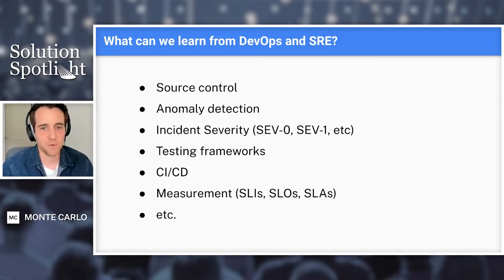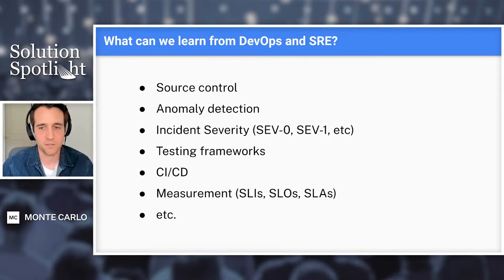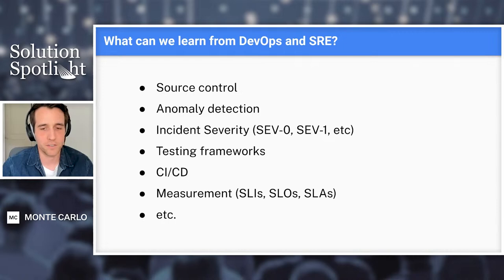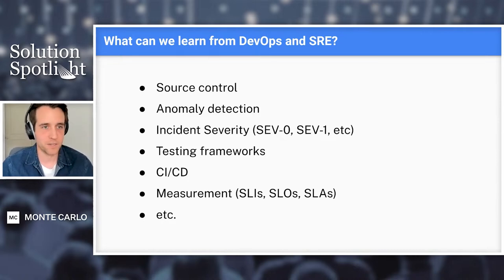There's so much to be learned from DevOps because effectively it's very similar to what we're trying to do. We have code that data engineers are writing, we are merging that code, we're potentially finding anomalies, and then we can set things like severity to incidents. We want severity so that we know the difference between a sev-zero — where basically your entire company should stop what they're doing and solve the problem — or a sev-four where maybe we just ignore this for now. Also things like testing frameworks, how do we actually test our code? CICD flow — how do I deploy new models continually in a way that's safe? And measurement — we want to measure our success and progress, which is often the key tool for anyone trying to convince leadership to invest more.